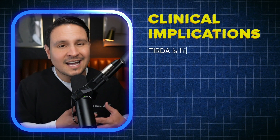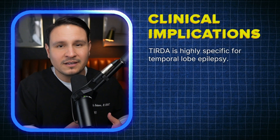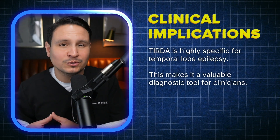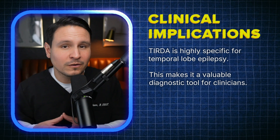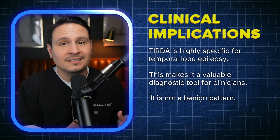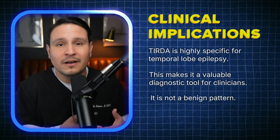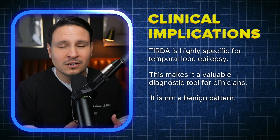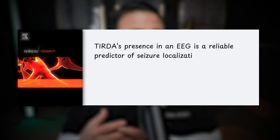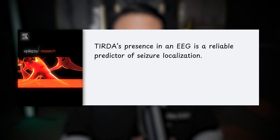Let's talk about the clinical implications. TIRDA is highly specific for temporal lobe epilepsy, making it a valuable diagnostic tool for clinicians. It is not a benign pattern — it indicates a risk of focal seizure and often correlates with the seizure focus.